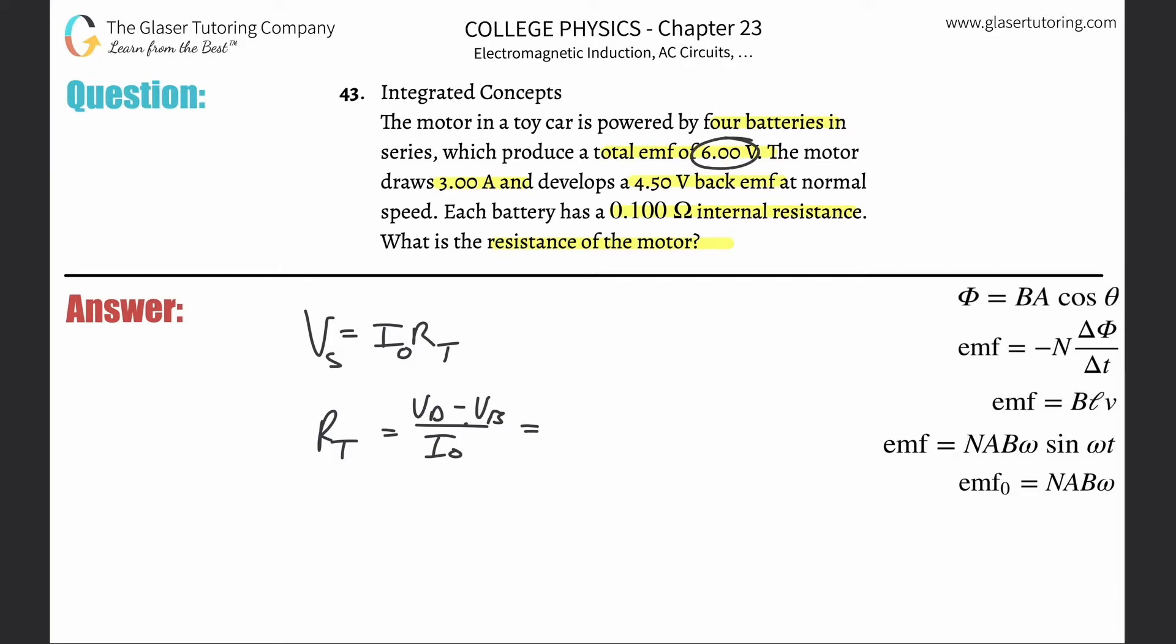So in other words, they gave us the driving voltage. They said it's going to produce a total emf of six volts, and then the back voltage is going to be 4.5. And then the operating current basically is three amps. So this is basically going to be 1.5 over 3, or 0.5 ohms.